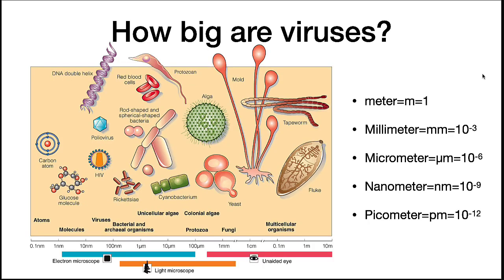How big are viruses? Most viruses are about 10 nanometers to 100 nanometers. The smallest bacterium is about 300 nanometers, a little bit larger than a ribosome. The largest virus, the Pandora virus, was discovered three years ago and is about one micron. The Pandora virus is infecting a eukaryotic cell.